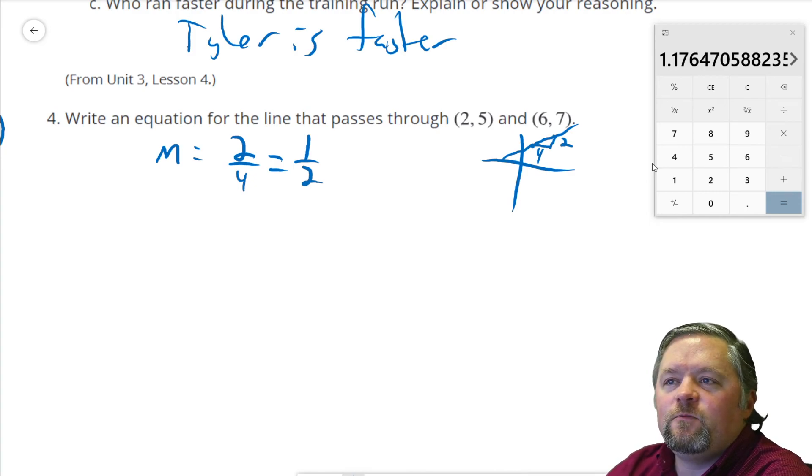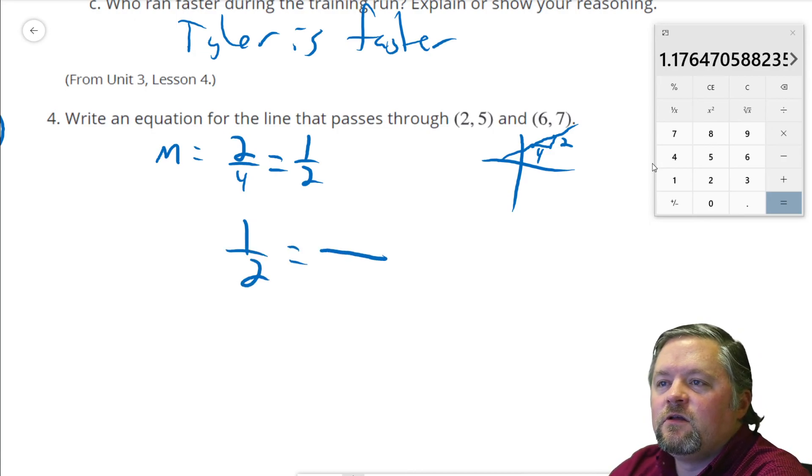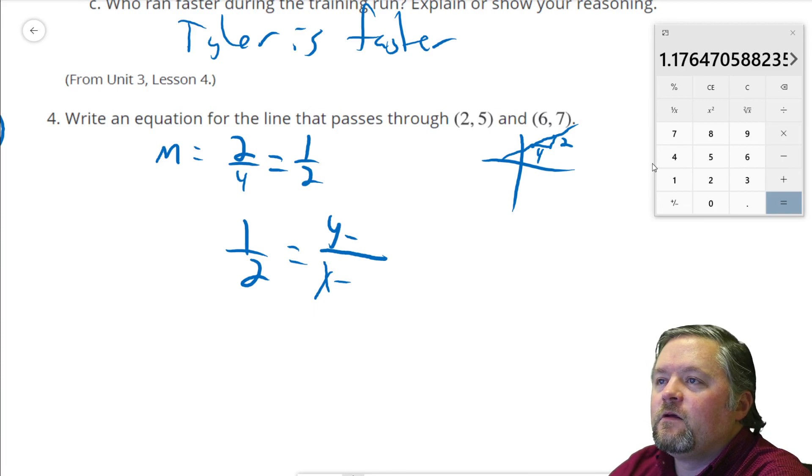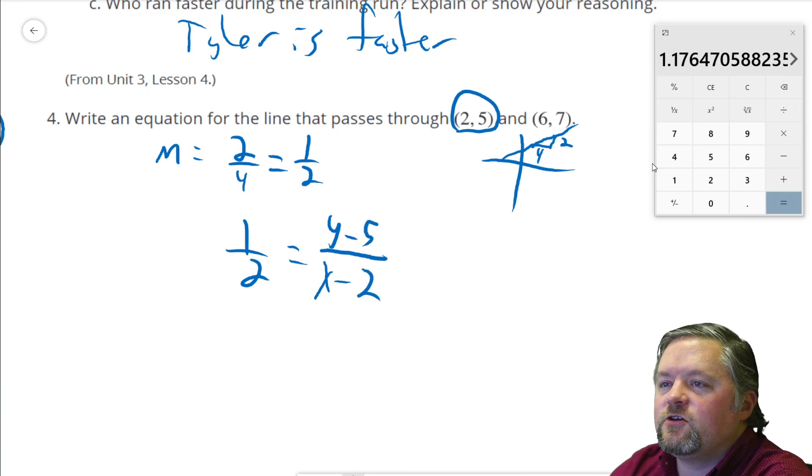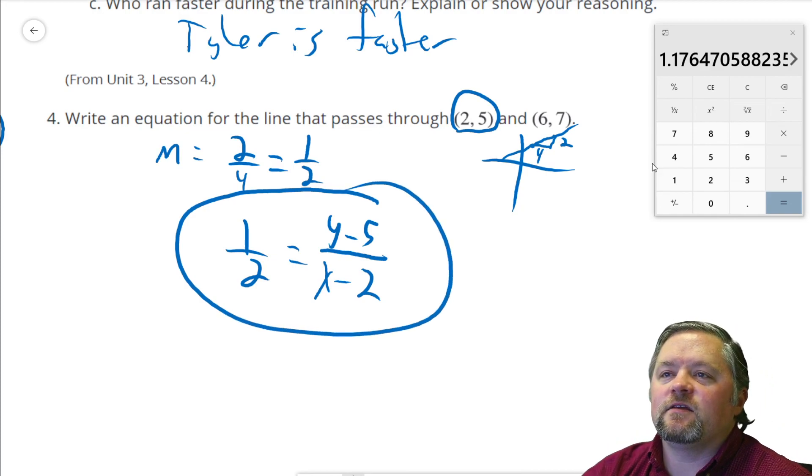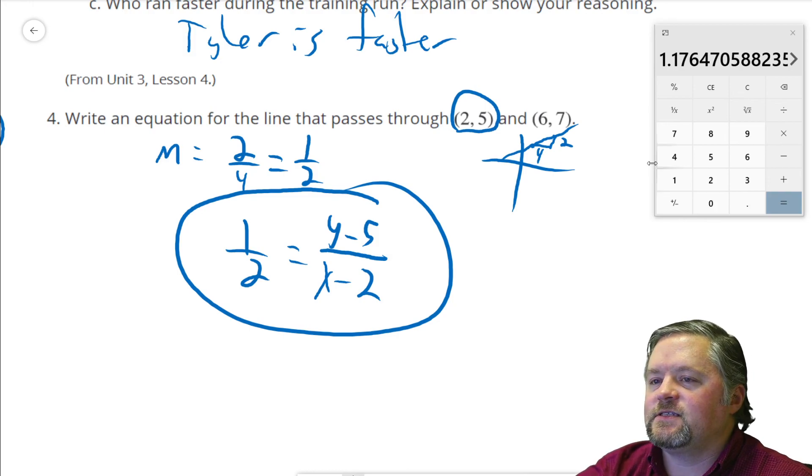Remember using our properties of similar triangles, we know that Y minus the Y value of a point over X minus the X value of a point has to be equal to the slope. Y minus, let's pick a point. I'll use this one. The Y value of that is 5. The X value of that is 2. That's the equation of the line that goes through (2, 5) and (6, 7).